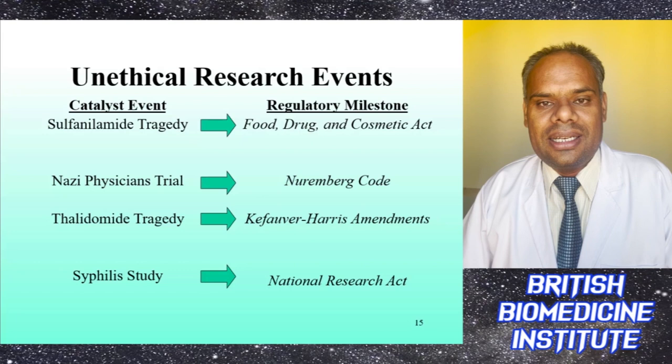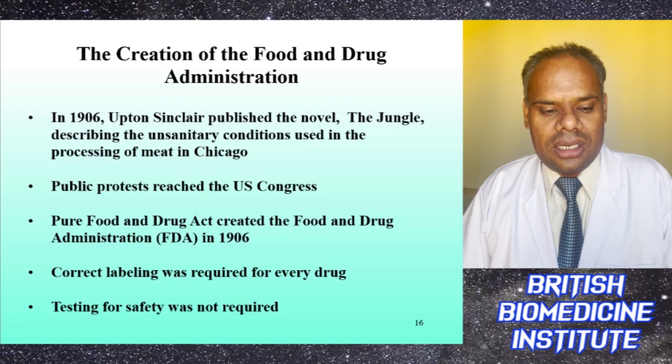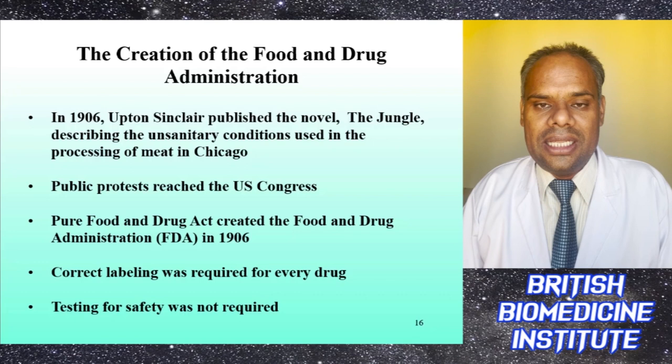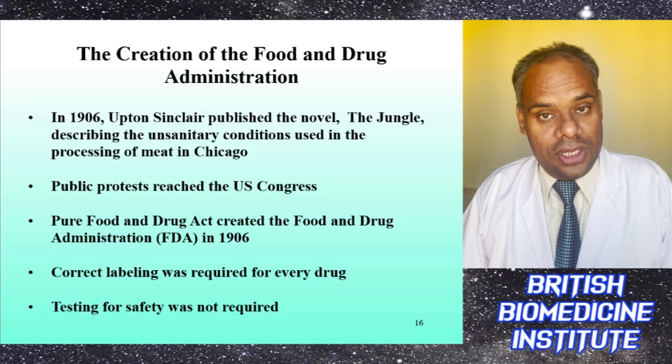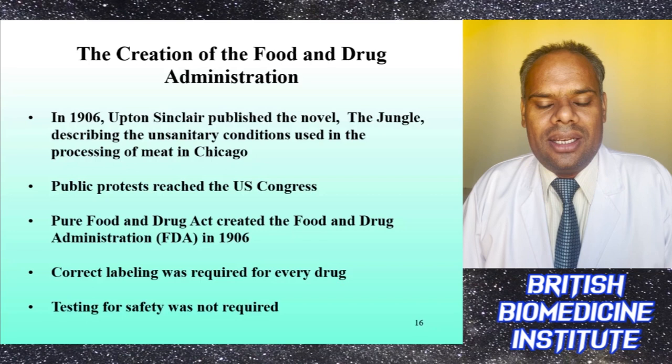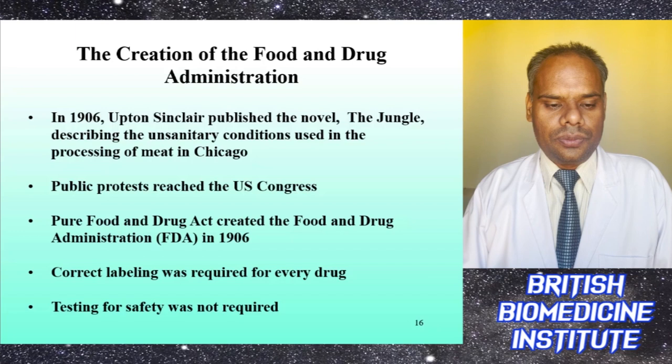In 1906, Upton Sinclair published the novel The Jungle, which described unsanitary conditions in meat processing in Chicago. This triggered public protest that reached the US Congress, and the Pure Food and Drug Act was created in 1906. It stated that correct labeling is mandatory for every new drug, though testing for safety was not yet required at that time.